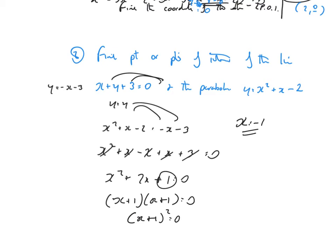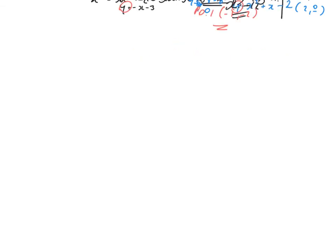To get the y-coordinate, put x equals minus 1 into an equation starting with y — I'll use the curve equation: y equals (-1) squared plus (-1) minus 2, which is 1 minus 1 minus 2, giving minus 2. So there is only one point of intersection: (-1, -2).